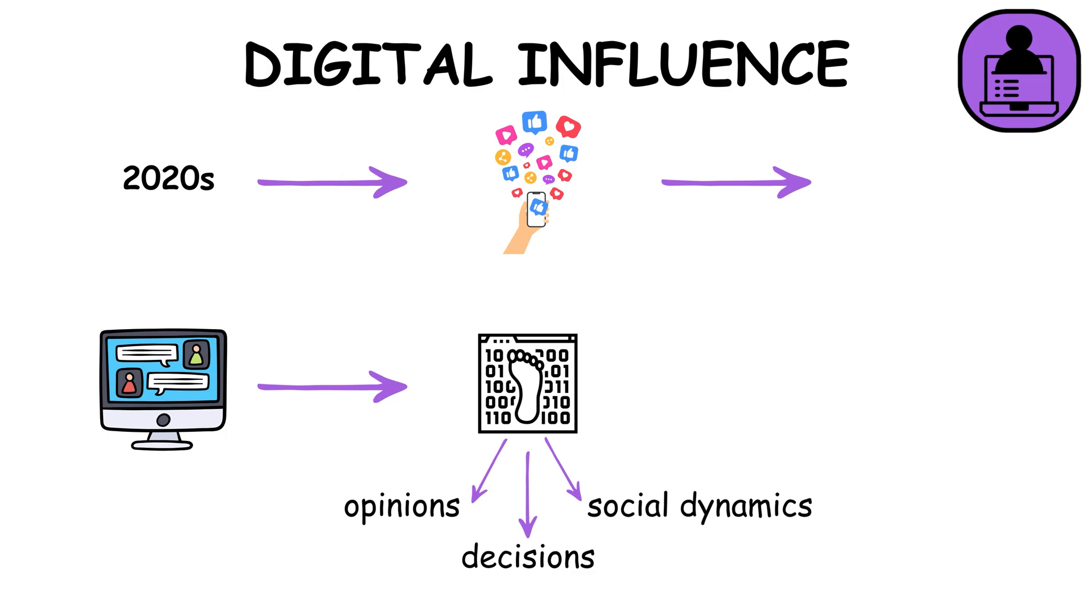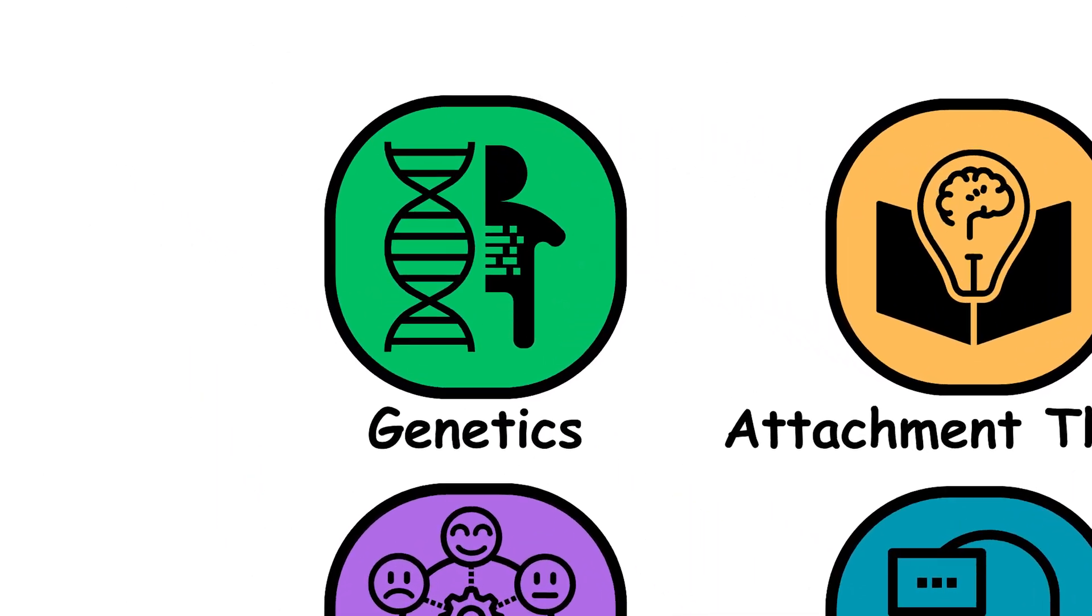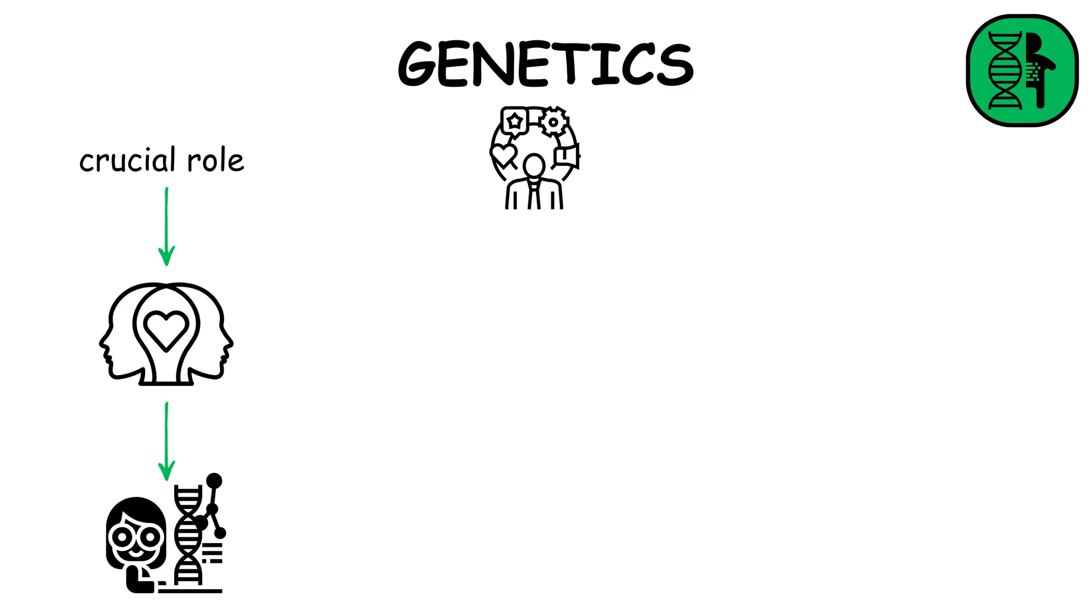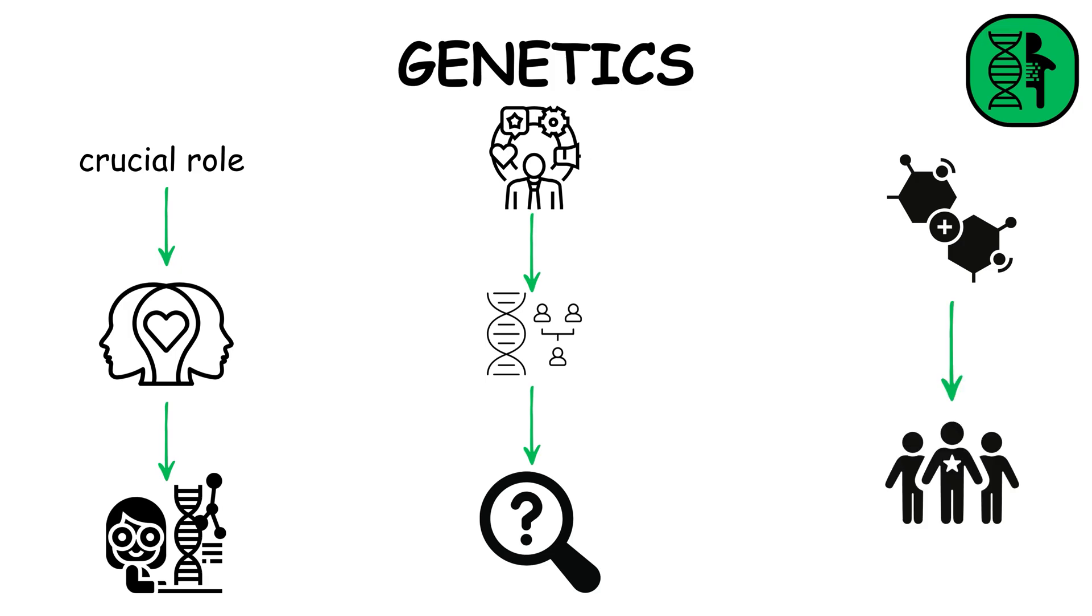Genetics plays a crucial role in understanding human behavior. The study of genes and their impact on traits and behaviors has revealed biological predispositions, showing how genetics interact with environment to shape individual differences in behavior.